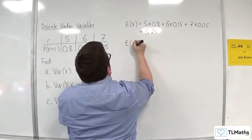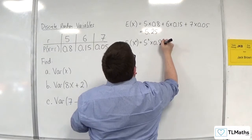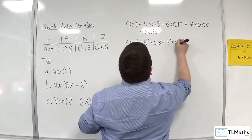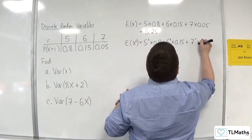Now E of x squared will be 5 squared times 0.8 plus 6 squared times 0.15 plus 7 squared times 0.05.